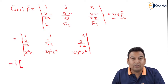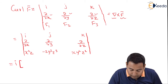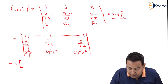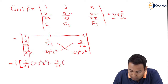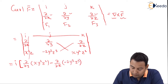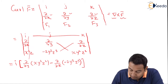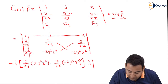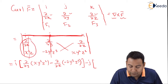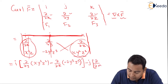This is your normal determinant expansion. For i: leave the first column and first row, cross multiply — that is ∂/∂y of (xy²z²) minus ∂/∂z of (−2y³z³). For the second term: minus j — leave this column and row — cross multiply giving ∂/∂x of (xy²z²) minus ∂/∂z of (x²z).